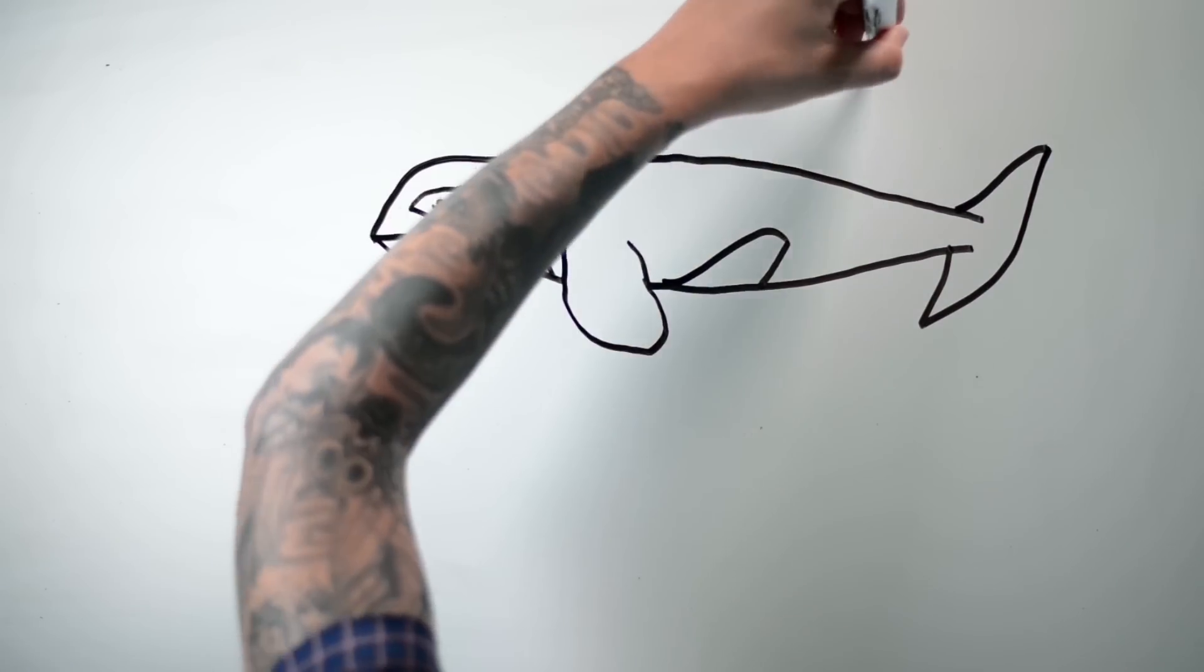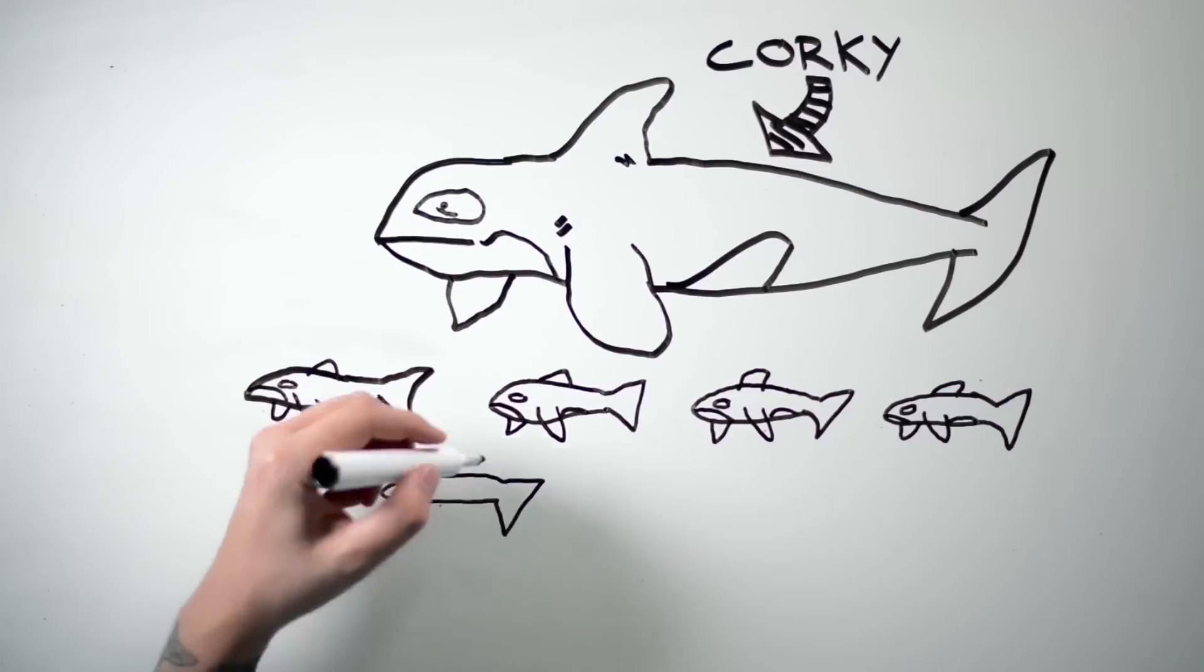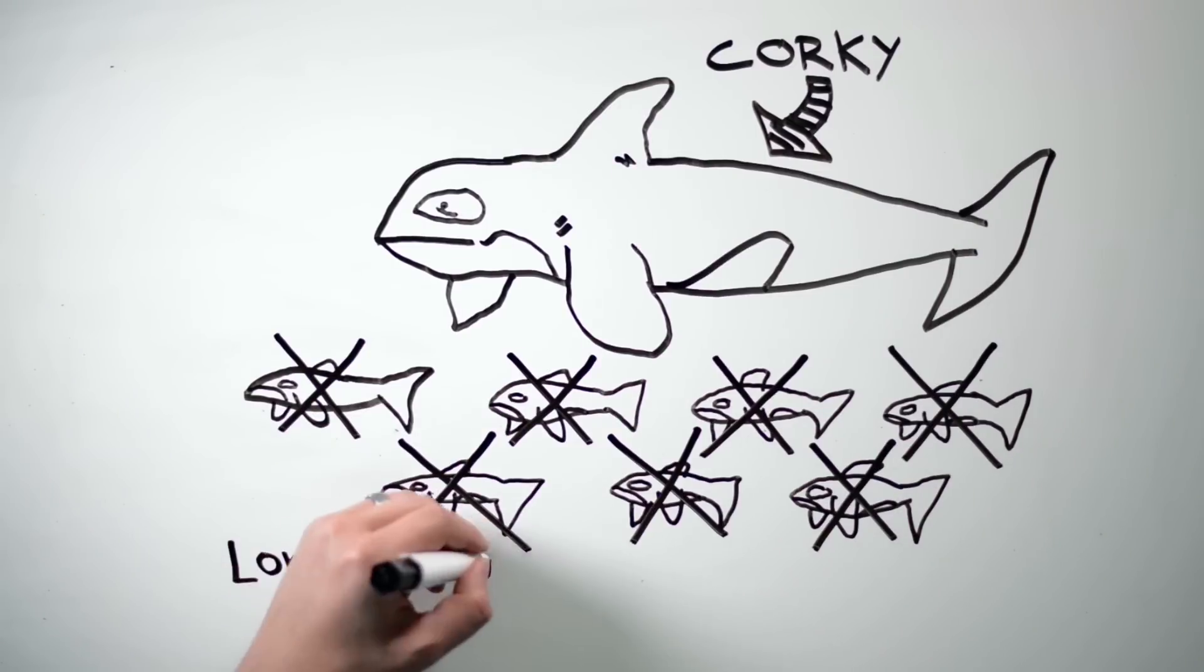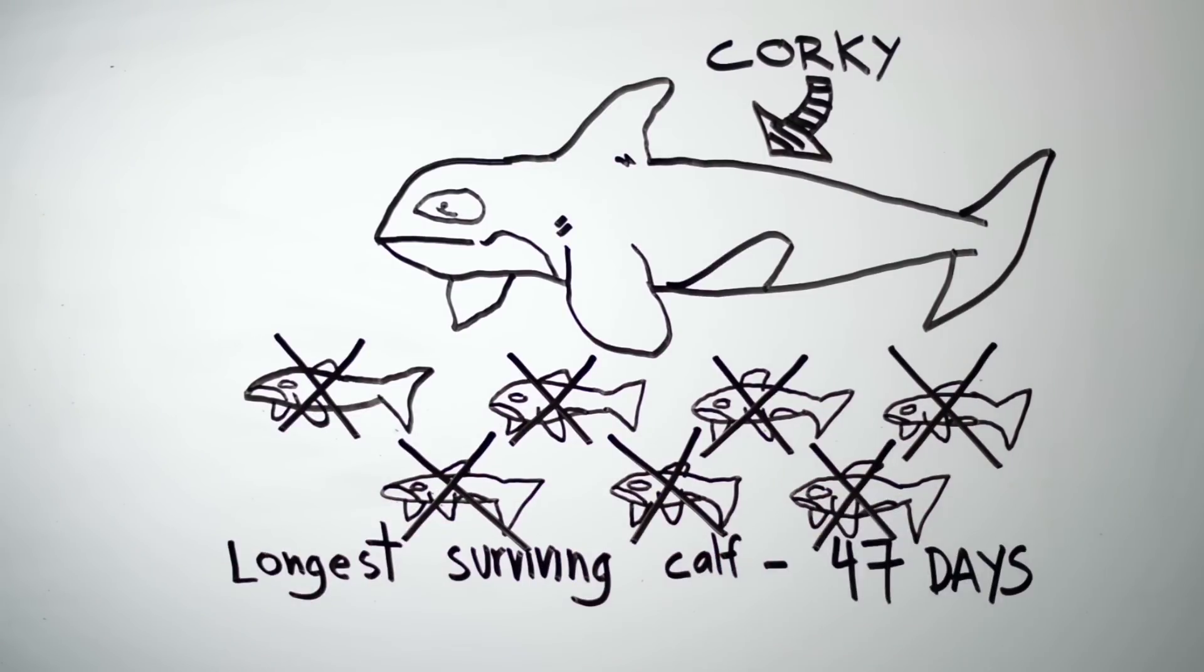Sometimes, I'd perform with a whale named Corky. Corky had been pregnant seven times, but none of her babies had survived. She liked me a lot. Looking back, I think she just wanted to be close to a baby because she couldn't have one herself.